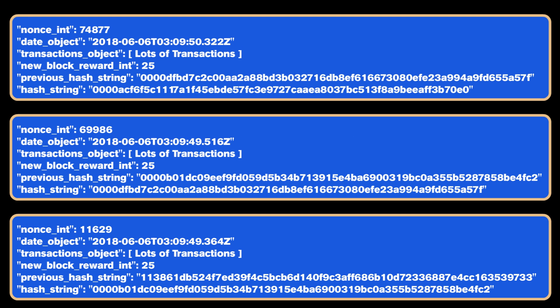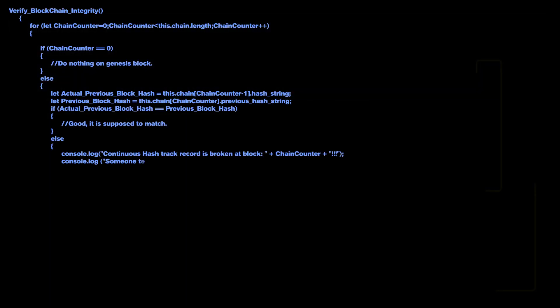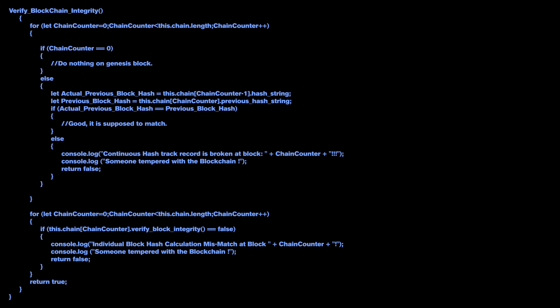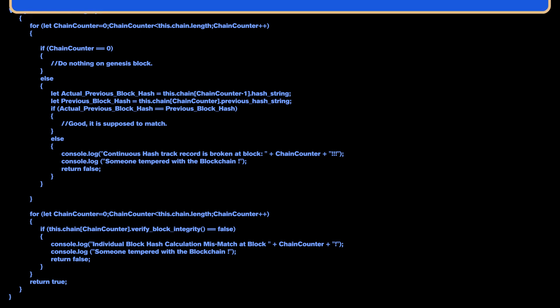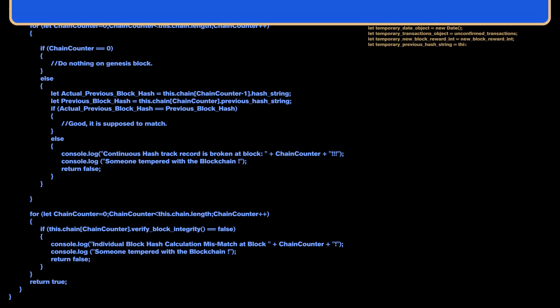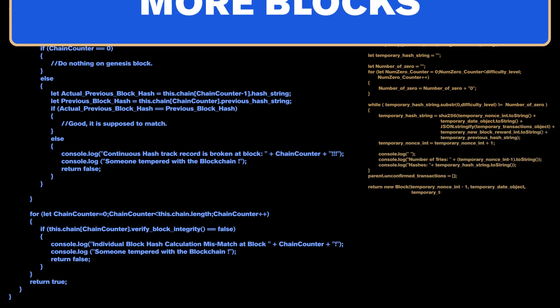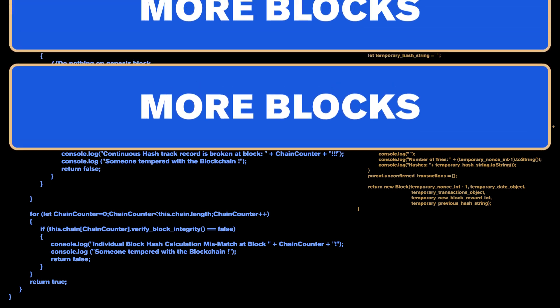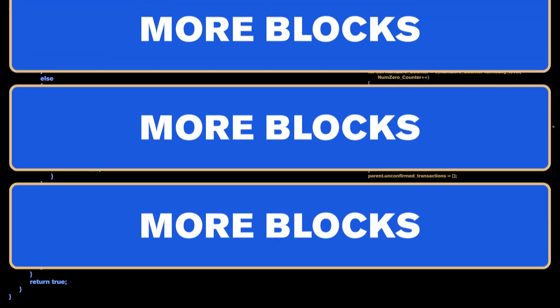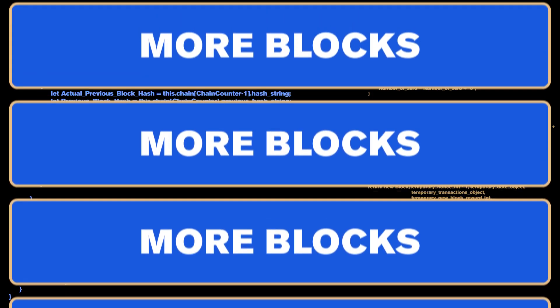Assuming that happened, it's time for barrier two: blockchain cascading validation. Every block contains the hash identifier of the block before it. If someone somehow changes data in a block by magically bypassing its internal hash validation, they now have to contend with the fact that the block on top holds the previous copy of that hash — and that has to be changed as well. Doing so requires recomputing the hash for that block, which takes time due to the difficulty level. For cryptocurrencies actually in use, we're talking thousands, millions, billions of blocks above it — game over.